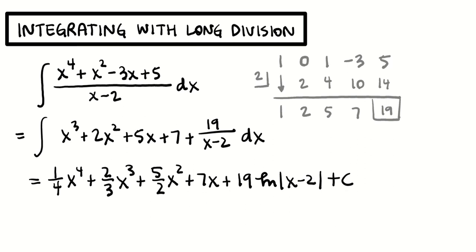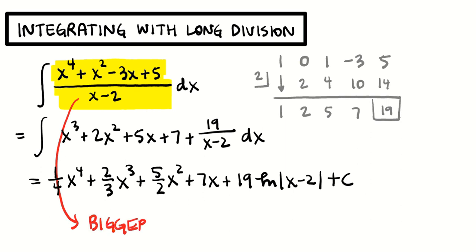The big thing we need to recognize is: if we're integrating a fraction that is bigger on top, we're going to need to use long division before we anti-differentiate. That's the dead giveaway — if it's bigger on top, we're going to use long or synthetic division.